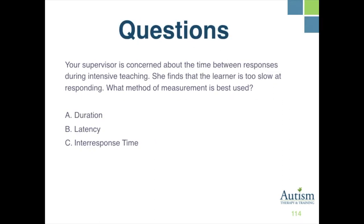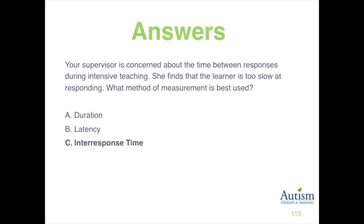Your supervisor is concerned about the time between responses during intensive teaching — the learner is too slow at responding. What method of measurement is best used? A, duration; B, latency; or C, inter-response time? The correct response is C, inter-response time.